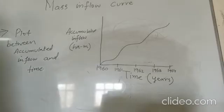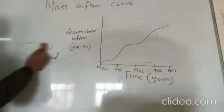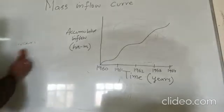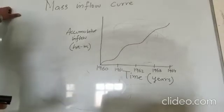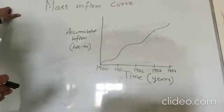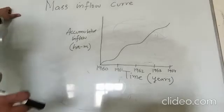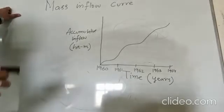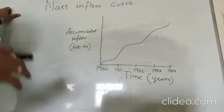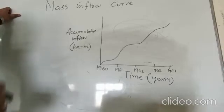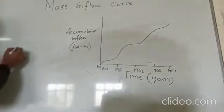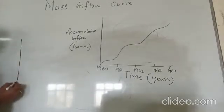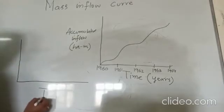We can plot the mass inflow curve with the help of an inflow hydrograph. To plot a mass inflow curve, we need data of discharge with respect to time, so that we can first plot the inflow hydrograph. With the help of that inflow hydrograph, we can then plot the mass inflow curve. Let us start plotting an inflow hydrograph.